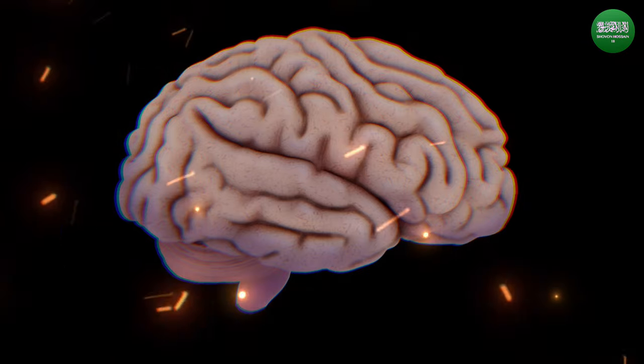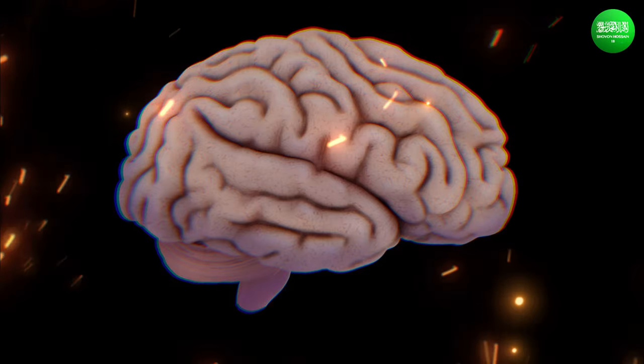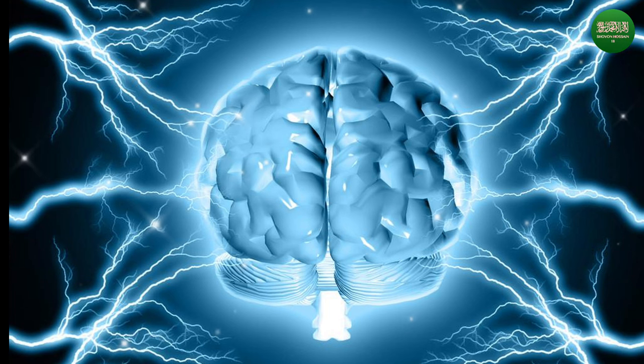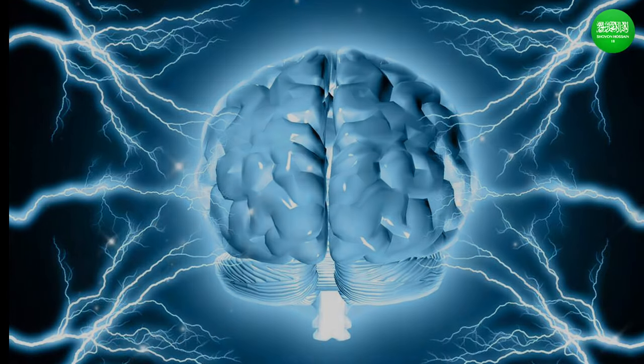Our brain has more than 100 billion neurons, more than 100 billion. As the brain grows, our brain has more than 100 billion neurons.